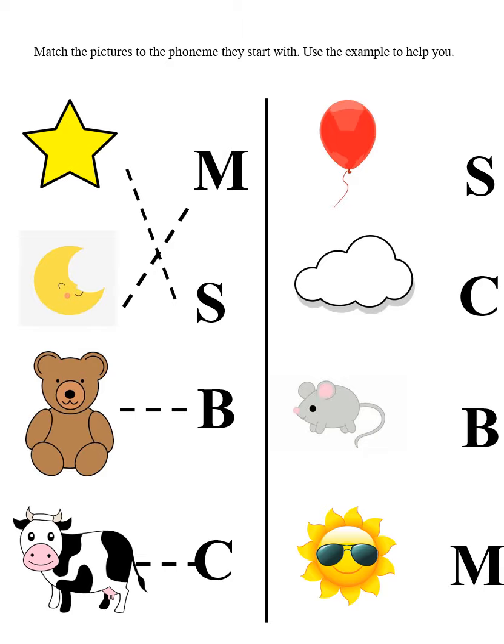Now, we have four more pictures. Balloon, cloud, mouse, and sun. Ba-ba-loon. Ba-ba-loon. Does it have the s-s sound? No. What about the c-c-c sound? Ba-ba-loon. No. What about the b-b-b sound? Ba-ba-loon. Yes. Very good.